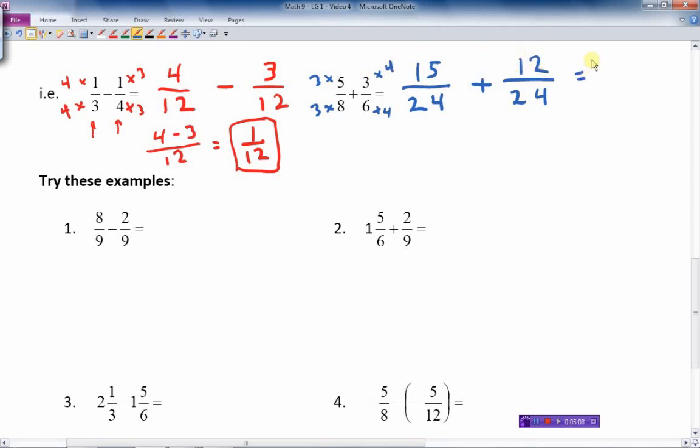And now I can add them together. Fifteen plus twelve, all over twenty-four. So that gives us fifteen plus twelve is twenty-seven over twenty-four.